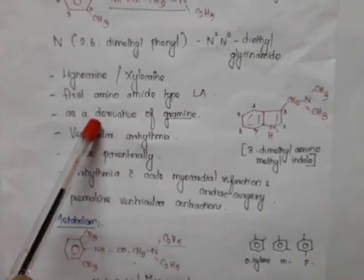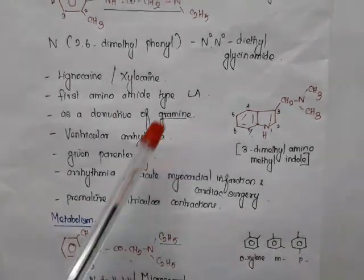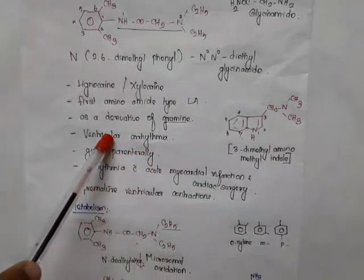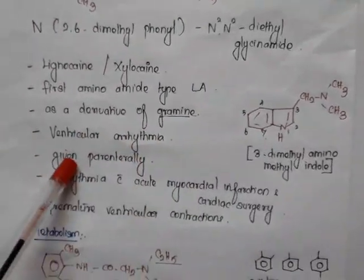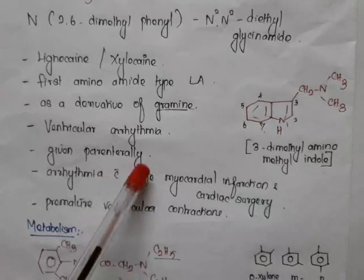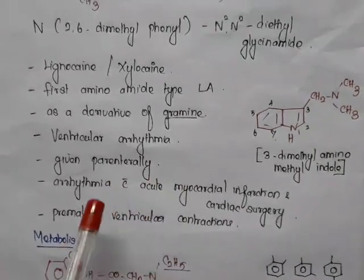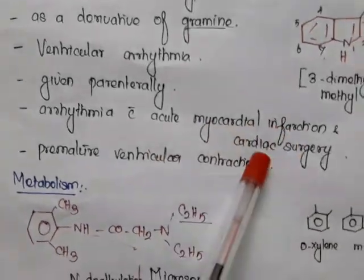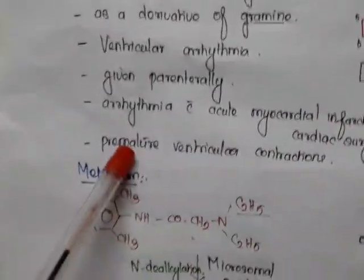Lidocaine is the first amino amide type of local anesthetic. It is considered a derivative of gramine. It is the drug of choice for emergency treatment of ventricular arrhythmia. It is effective only when given parenterally — it is not effective when given orally.